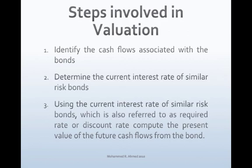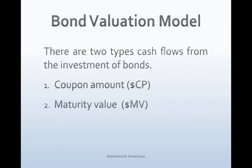Compute the present value of cash flows from the bond. There are two types of cash flows from bond investment: 1. Coupon amount — the interest payment received every year based on the coupon interest rate, which is a stream of payments over the life of the bond. 2. Maturity value — the par value of the bond that bondholders receive on the maturity date, which is a lump sum amount.